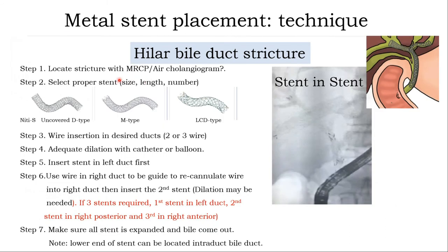Steps for stent-in-stent technique: Step 1, locate stricture guided by MRCP or air cholangioscopy. Step 2, select proper stent — size, length, and number; use uncovered detail, M-type or LCD-type. Step 3, wire insertion in all intended ducts — 2 or 3 wires. Step 4, adequate dilation with cutter or balloon in the first intended duct. Step 5, insert stent in the left duct first. Step 6, use the wire in the right duct to recannulate through the mesh and insert the stent. Step 7, make sure all stents expand; if not expanding, dilate with balloon and confirm bile coming out.